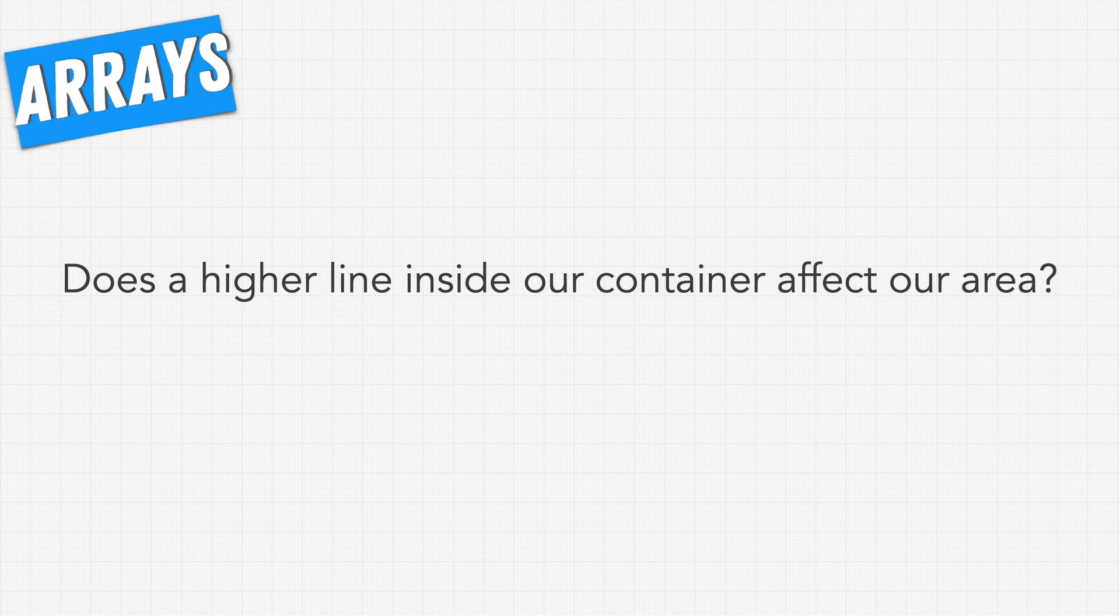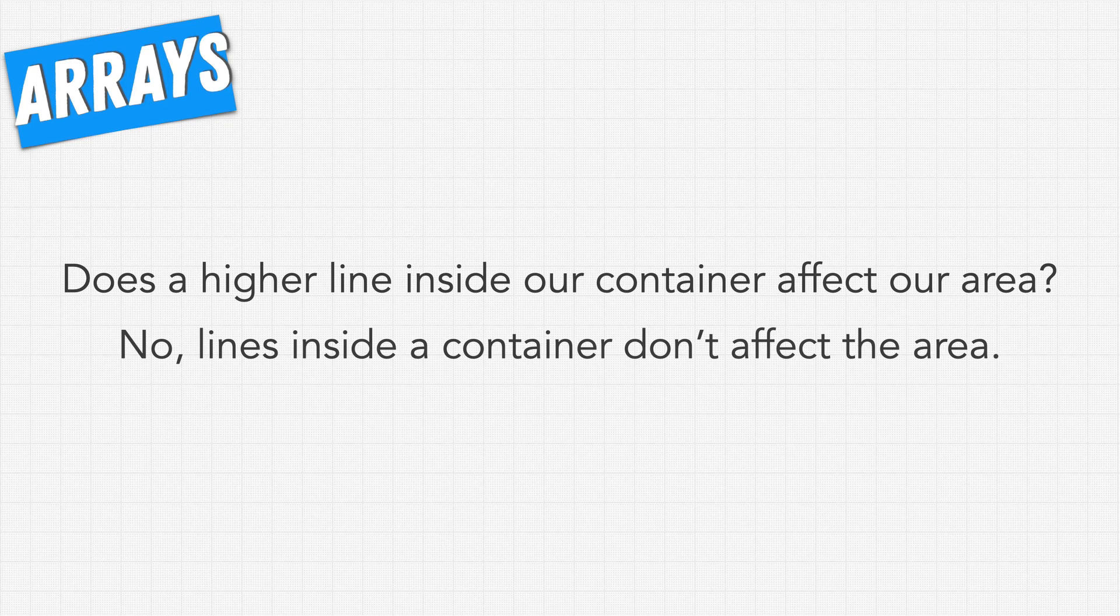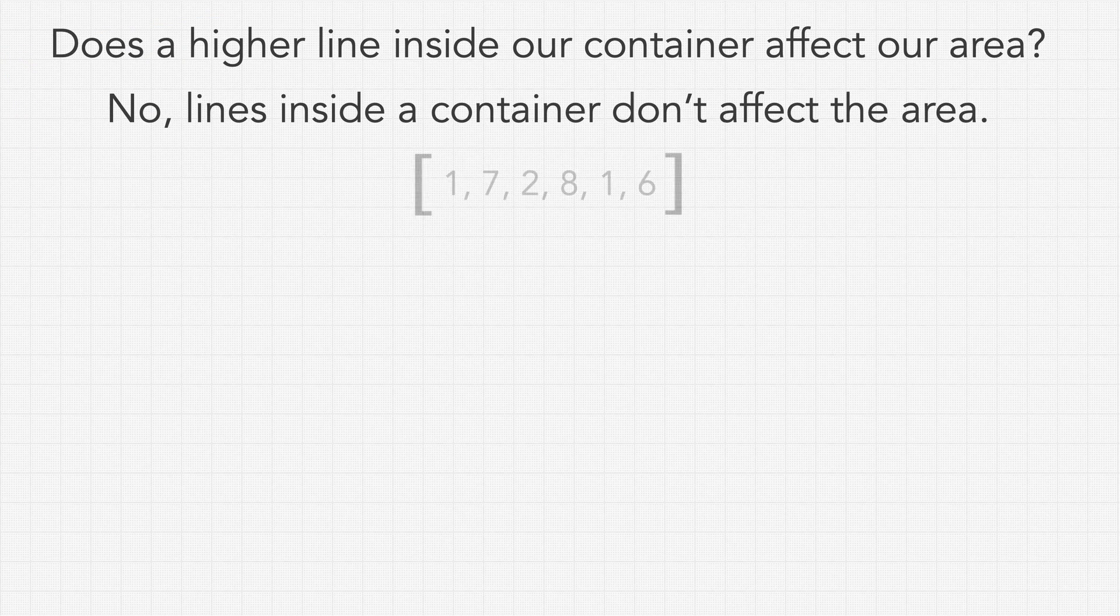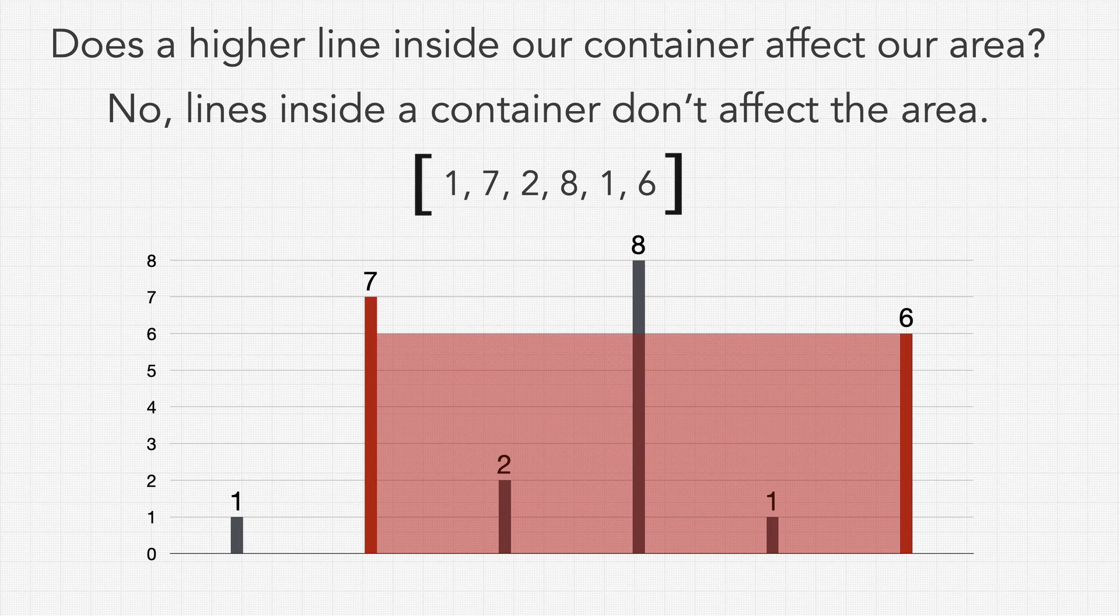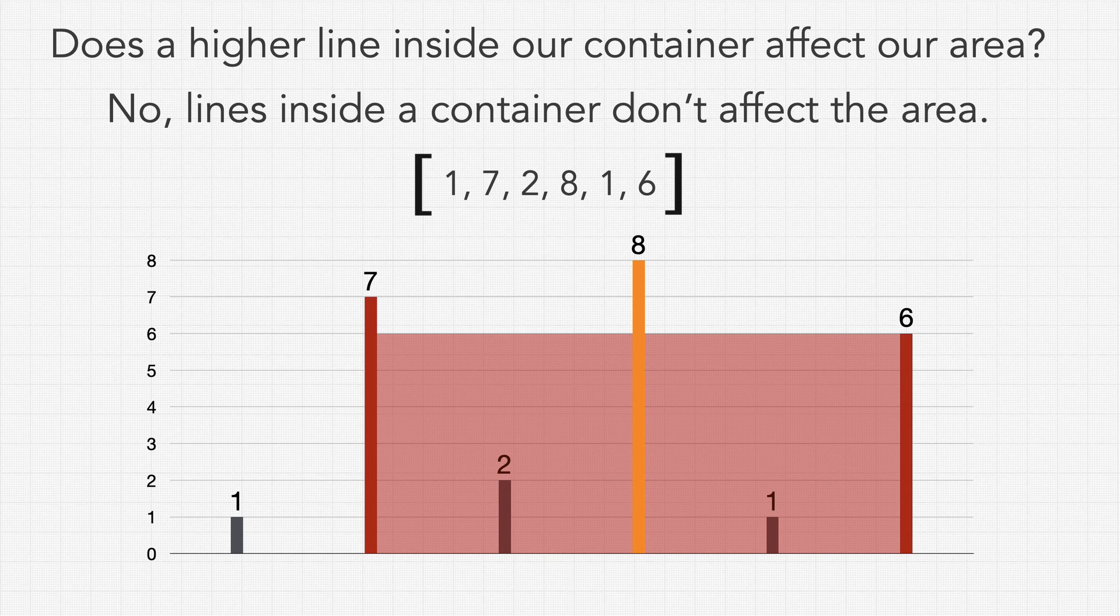The next question we might ask is does a higher line inside our container affect our area? They'll probably respond no, lines inside a container don't affect the area. What this means is that if we were given this array the greatest container we could form is using the 7 and 6 which would fill up this amount of water. Well notice though that this 8 is taller and sticks in the middle of our container seemingly breaking our container into two parts. The answer though is that we don't have to worry about this at all. In fact just assume that none of the lines inside of our chosen container affect the area calculation at all.